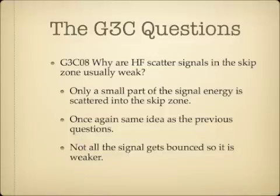Why are HF scatter signals in the skip zone usually weak? Only a part of the signal energy is scattered into the skip zone. Not all the signal gets bounced back, so it loses a lot of energy and becomes weaker.